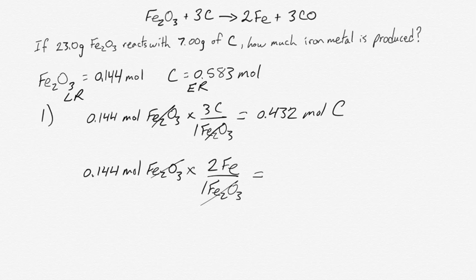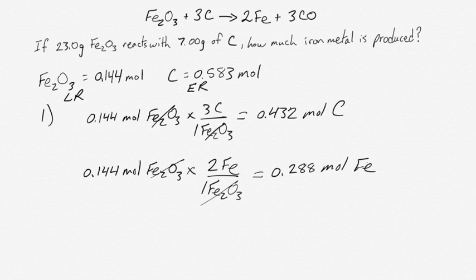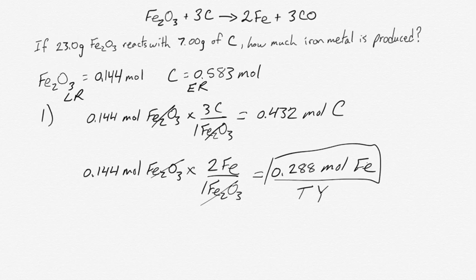And we set up our ratio, and it means we can cancel our iron 3 oxides. And we can work out that you can make a maximum of 0.288 moles of iron. And this 0.288 moles of iron, this numeric value, is our theoretical yield.